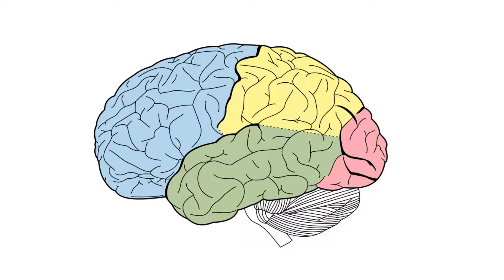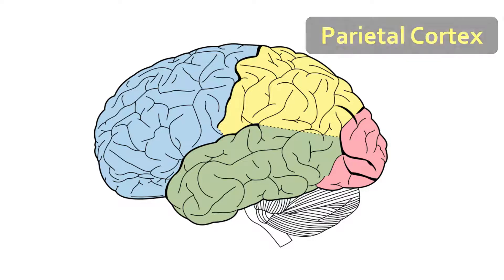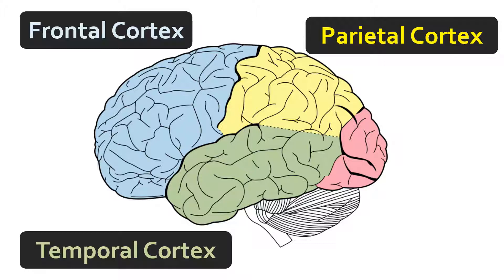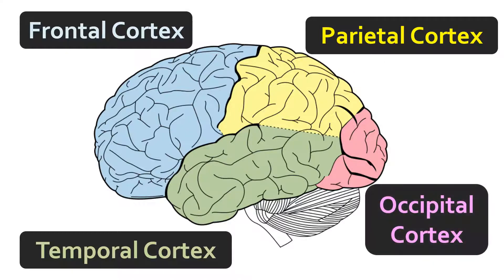Before we get into the limbic system, we need to briefly revise some basic core principles of sensory processing. Here are the four main lobes of the brain and the outer cortical regions: the parietal cortex in yellow, the temporal cortex in green, the frontal cortex in blue, and the occipital cortex — the visual cortex — at the back.